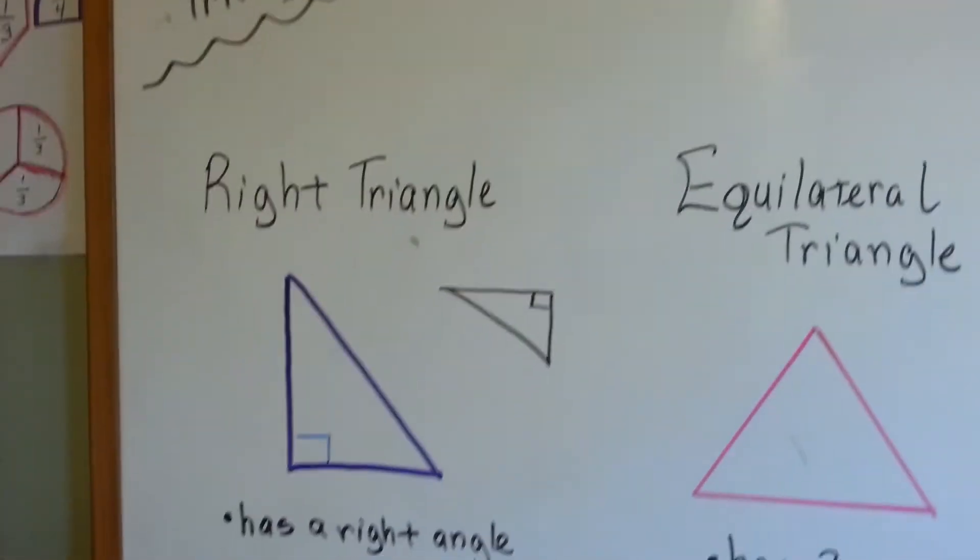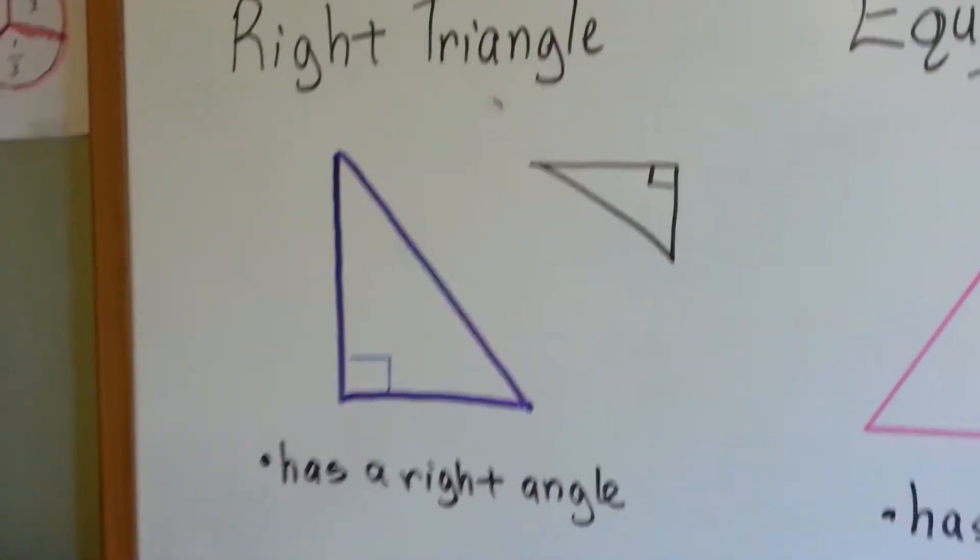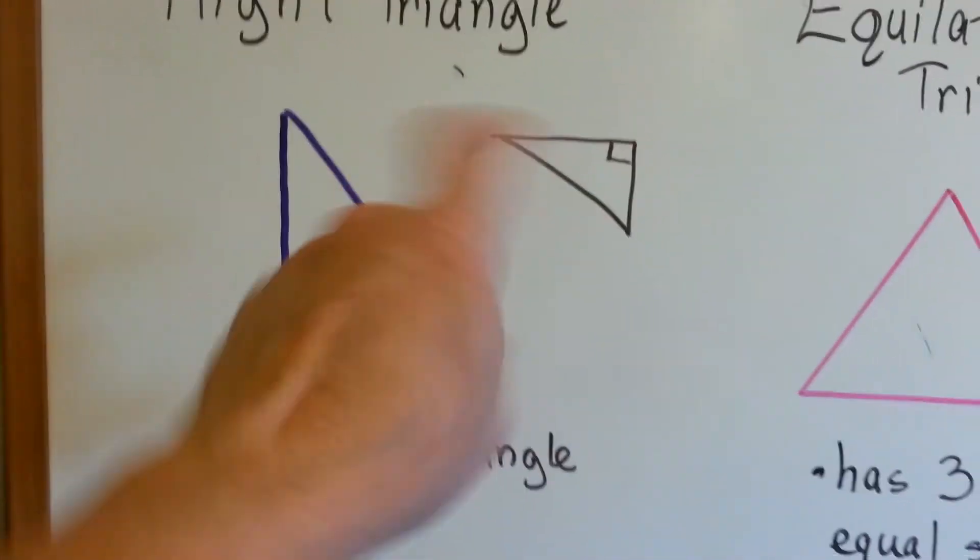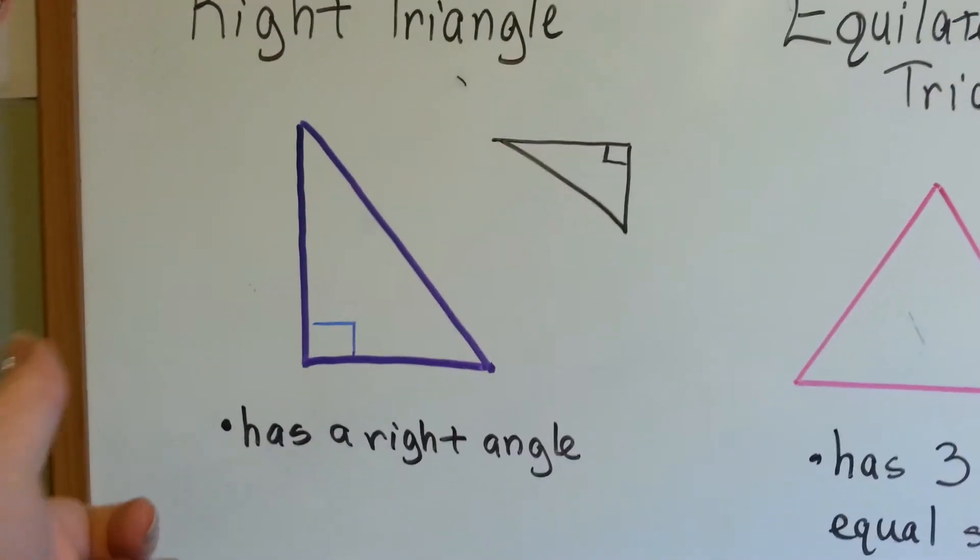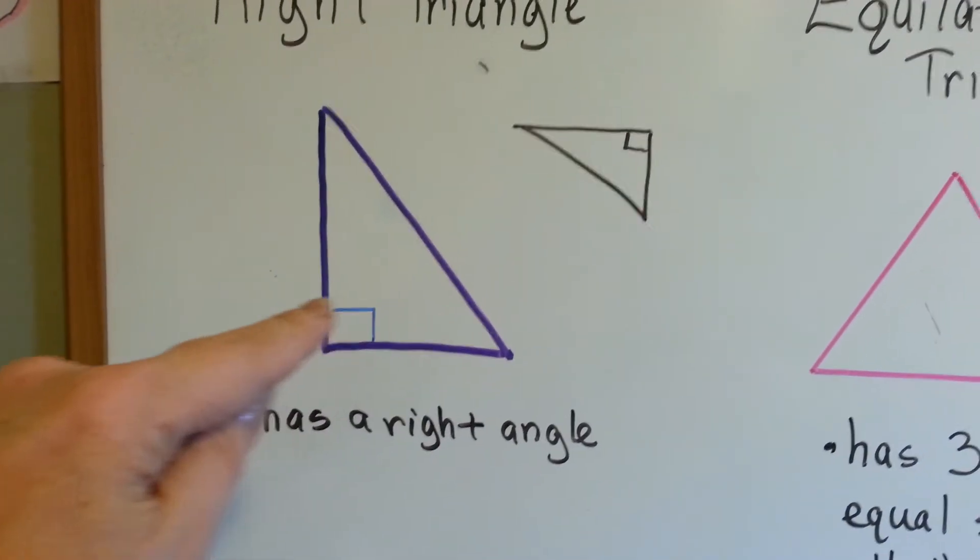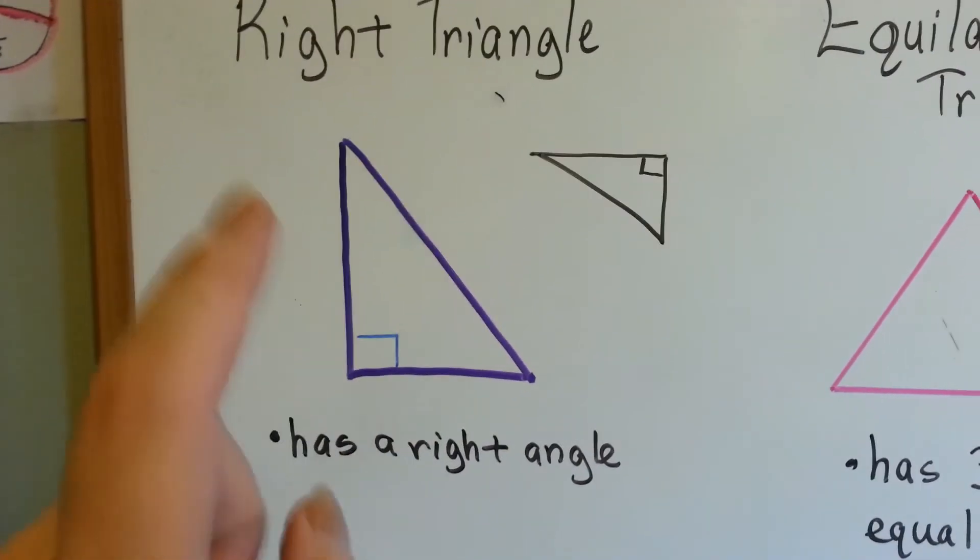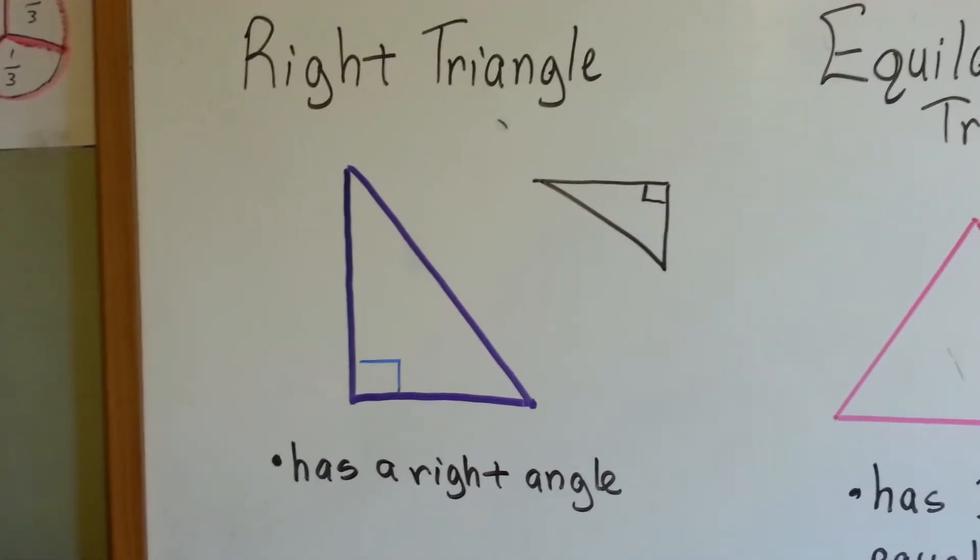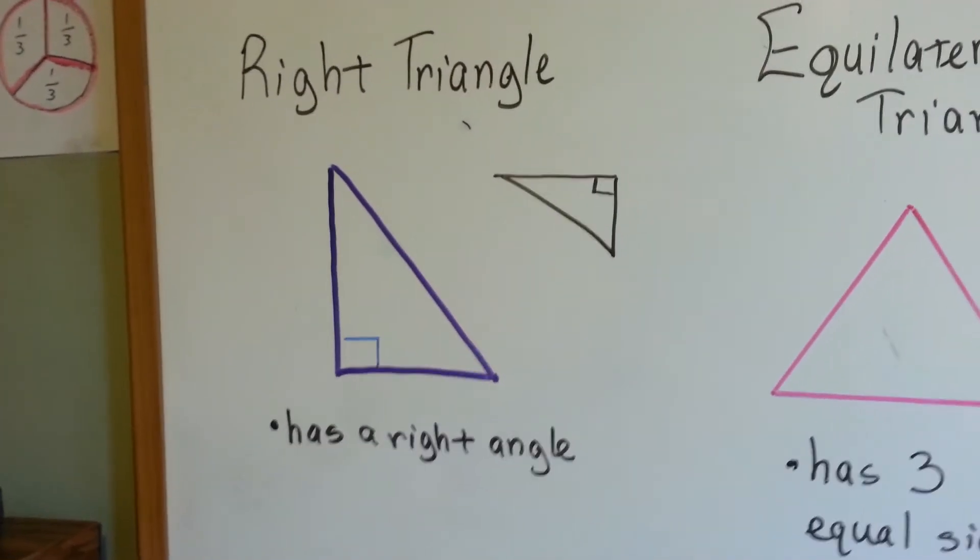The first one we're going to talk about is the right triangle. It doesn't matter which way it's laying on the paper. If it has a square corner, a right angle, then the triangle is a right triangle. Okay, that's the first one.